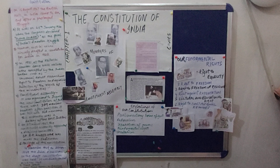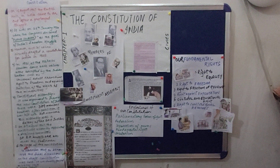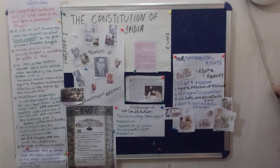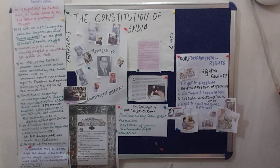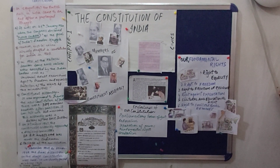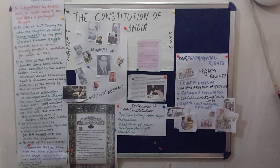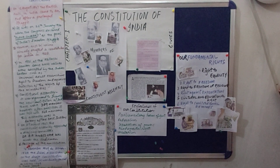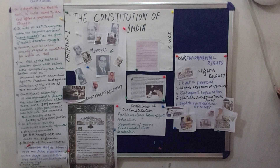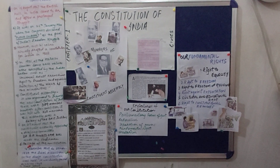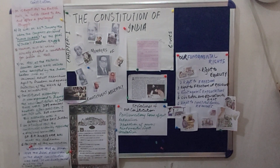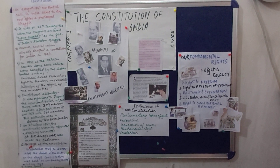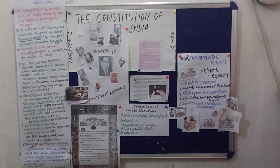The laws written in the constitution act as the source according to which rules and regulations for governing a country are derived. Every law enacted by the government has to be in conformity with the constitution. But the constitution constantly grows and evolves according to the needs, requirements, and aspirations of the people and functioning institutions.